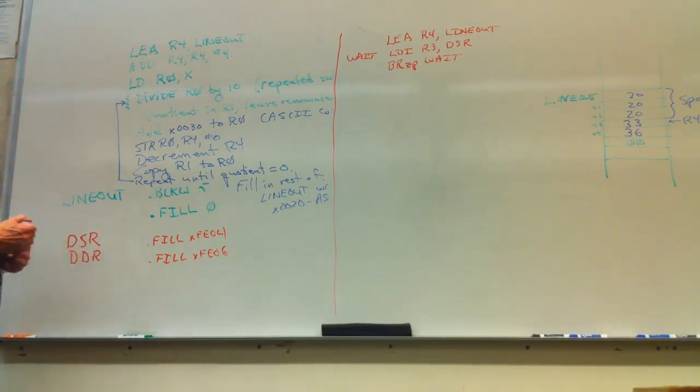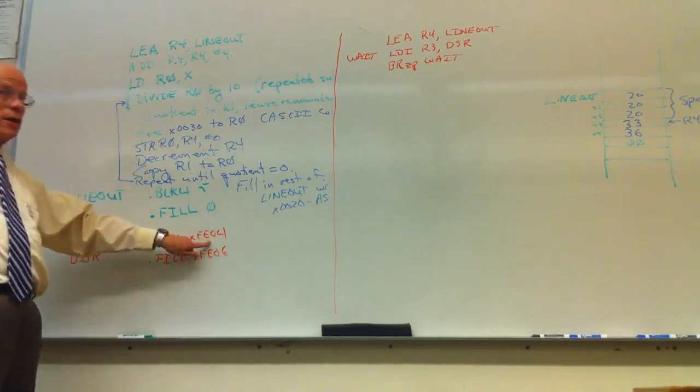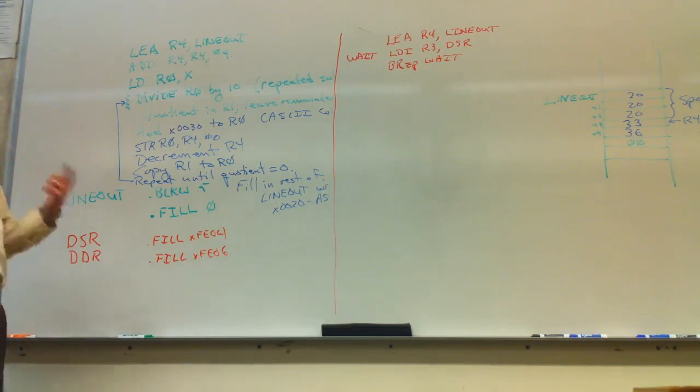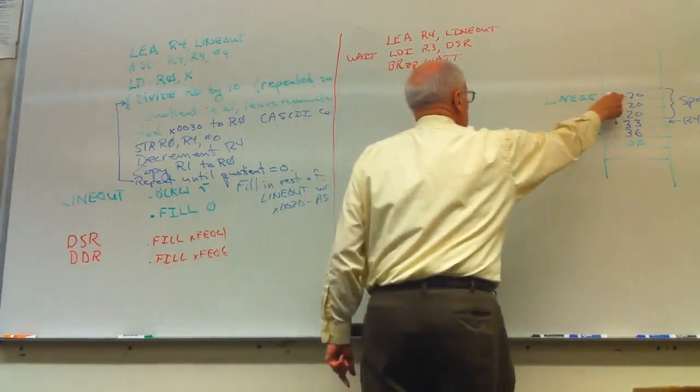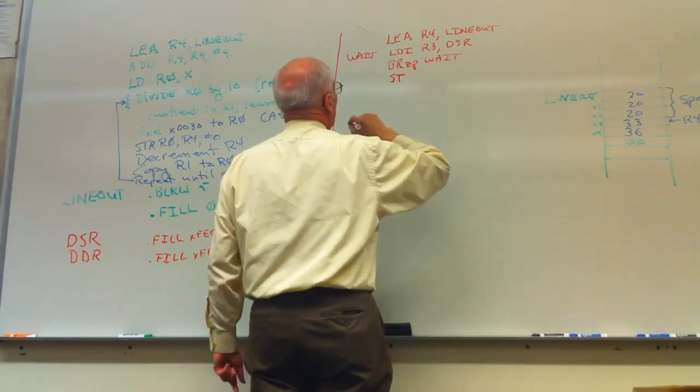We're going to have to have our display status register, so FE04 for the status, FE06 for the data register. We wait by pulling the contents not of this location but of this location, which we do with a load indirect display status register. The indirect says go to this location, use the contents of that location as the address of the operand.